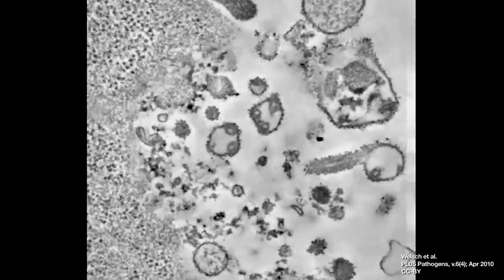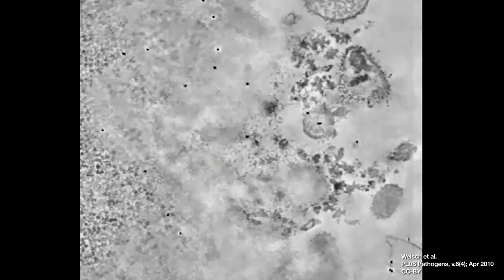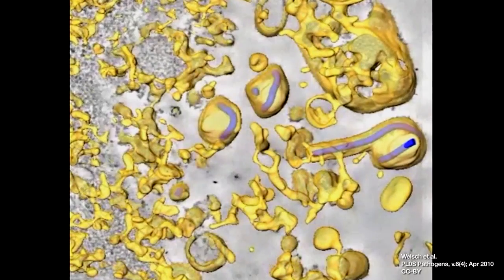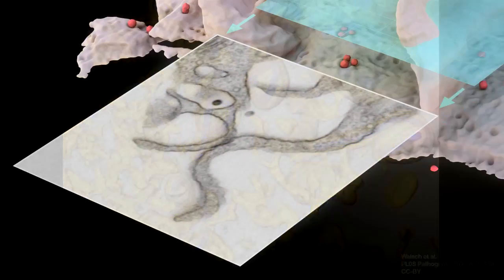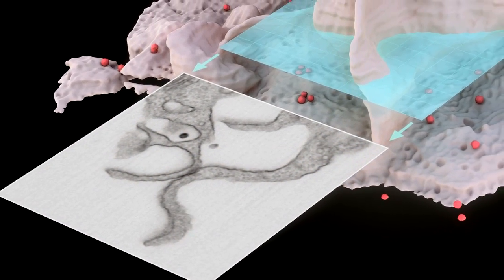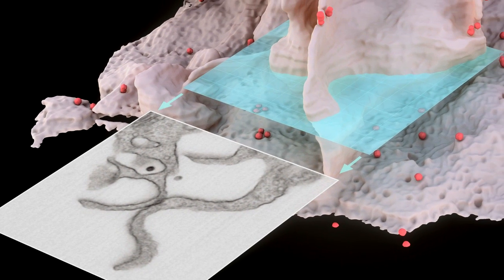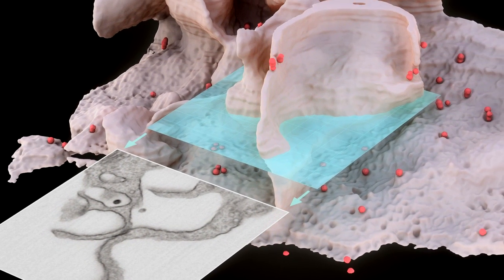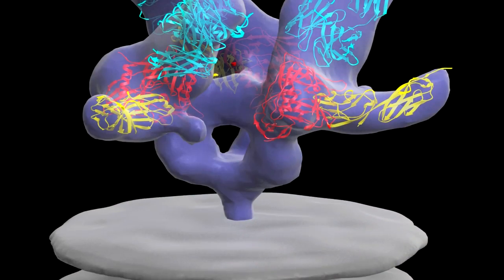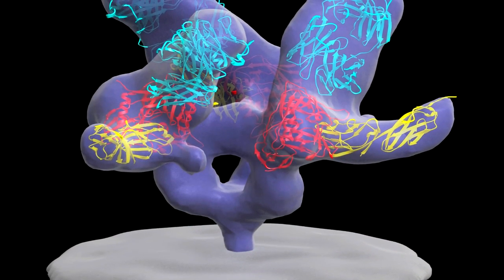Viruses actually need to get into the cell in order to make their own proteins, and so they often do this by using a subset of the machinery that's needed for the cellular translation. And in return, they actually inactivate some of the machinery so that they can make their own proteins. That's quite a devious way to do it.